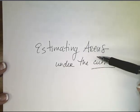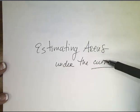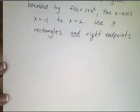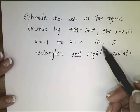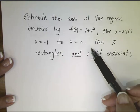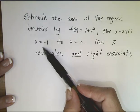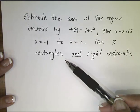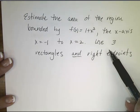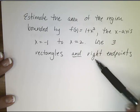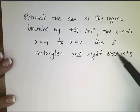Let's continue our exploration of estimating areas under the curves using calculus. We're going to start this video with an example. We're going to estimate the area of the region bounded by f(x) = 1 + x², the x-axis, and the lines x = -1 to x = 2. We're going to use three rectangles, and the height of our rectangle is going to be determined by the right endpoint.